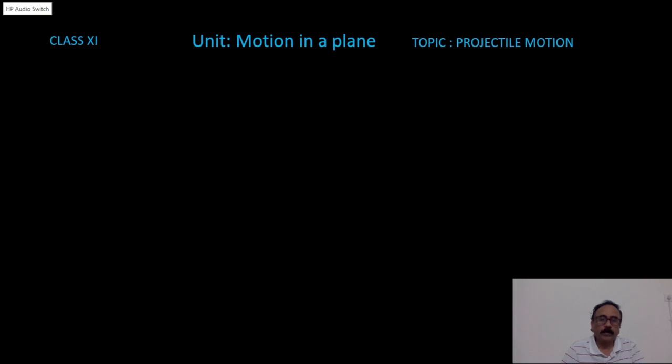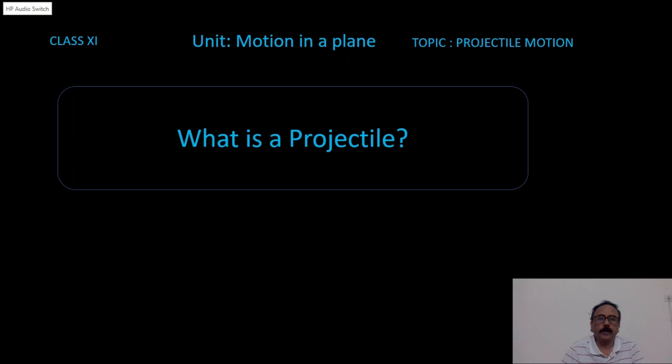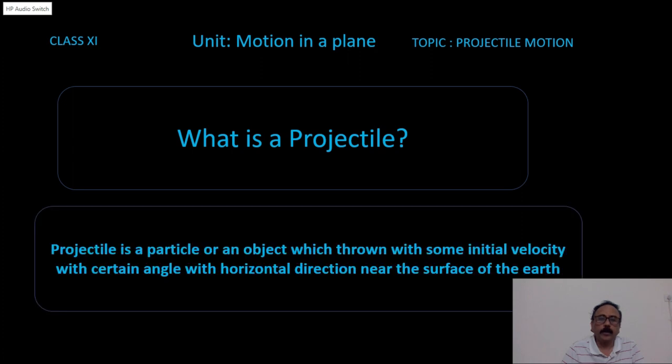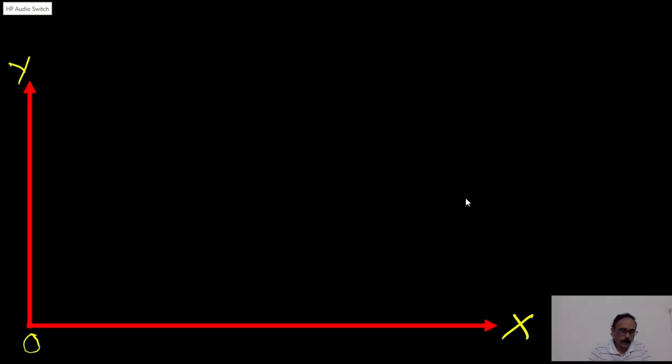To prove the path of the projectile is a parabola, first of all, we must know what is a projectile. The projectile is a particle or an object which is thrown with some initial velocity with certain angle with horizontal direction near the surface of the earth. Why do we say near the surface of the earth? The projectile will undergo the influence of only gravitational force.